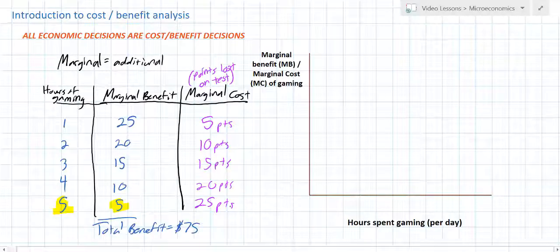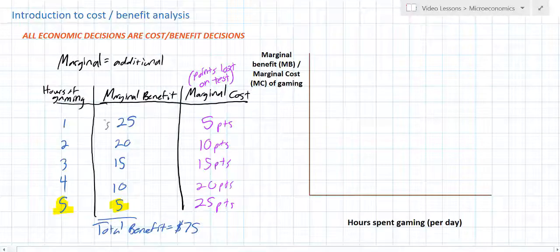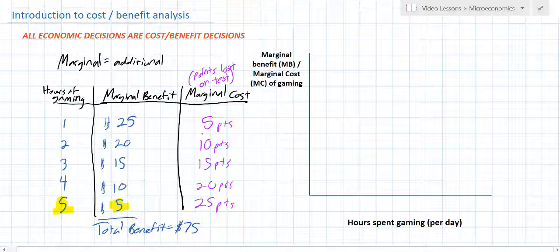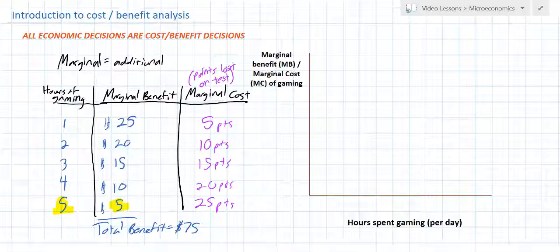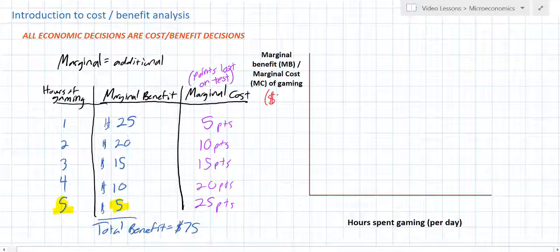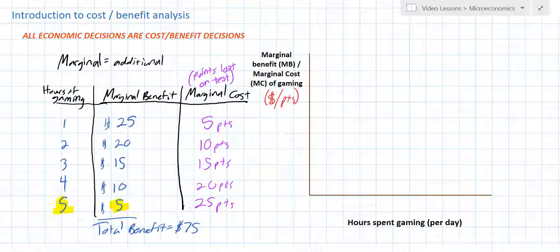Notice these are not the same units. On the left, I've got values expressed in dollars — how much I'd be willing to pay for each hour of gaming — and that decreases as I play more. On the right, I've got the number of points I would be losing on Monday's test for each additional hour of gaming. Later in the course, we'll always be expressing marginal benefits and marginal costs in terms of dollars.